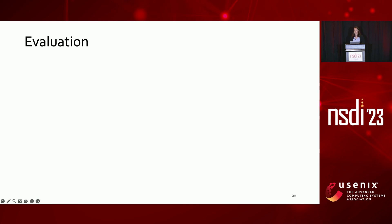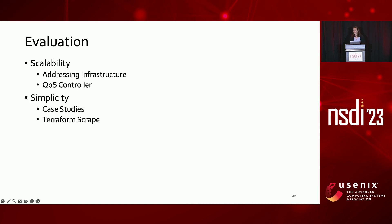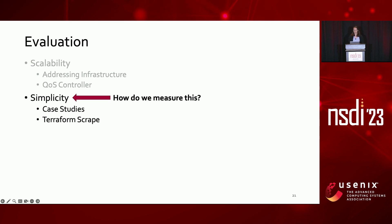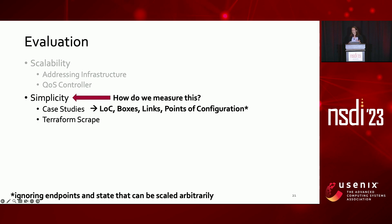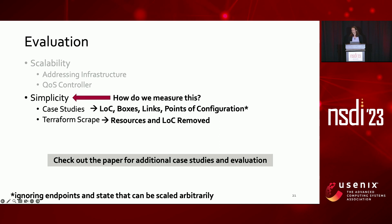We'll now take a quick look at evaluation. In the paper, we evaluate both the scalability of the proposed infrastructure changes as well as the achieved simplicity for tenants. In this talk, we'll just focus on simplicity. There's no agreed-upon metric for it, so we offer a few lenses. First, we take a look at example deployments and count the lines of code to create the deployment, as well as the number of network elements and points of configuration in the virtual topology. Note that in these counts, we'll ignore things that can exist in both APIs, like setting up endpoints and their IPs, as well as state that can be scaled arbitrarily, like ACL rules. Second, we take a broader view by scraping Terraform files from GitHub and determine how much we're eliminating from the tenant view.